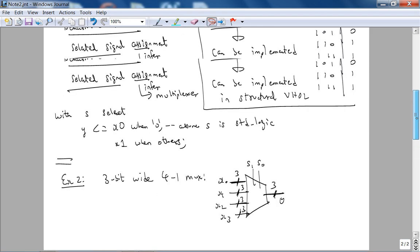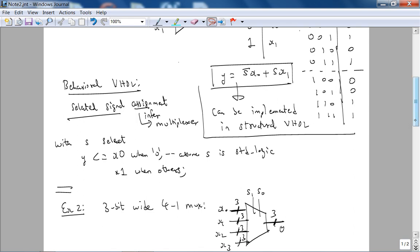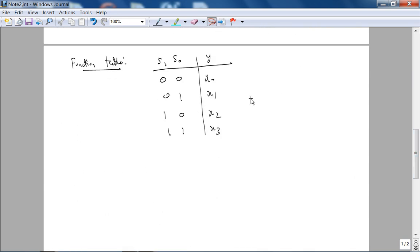From here, just like the last example, the 2 to 1 mux, you can very easily write the output expression. Y is when it's 0, 0, we're going to write sum of products, it's x0, or let me write out another term, 0, 1, it's x1, plus the other terms. You should fill this in, there are two other terms.